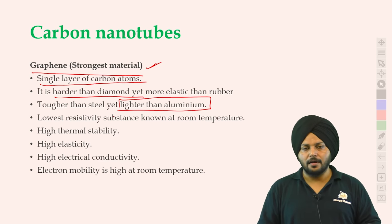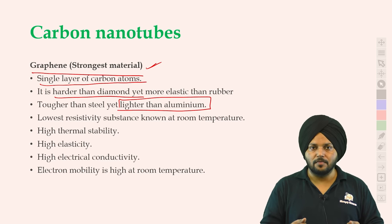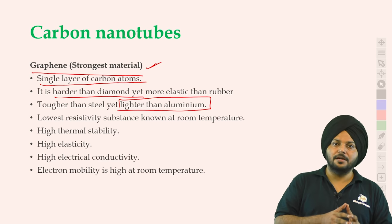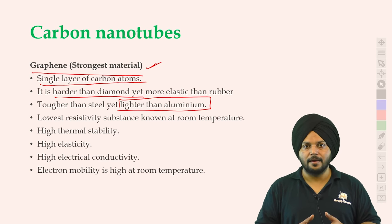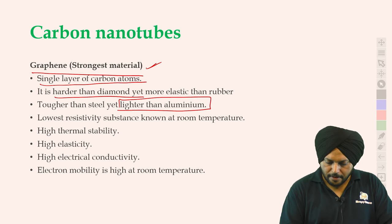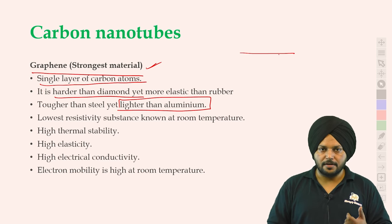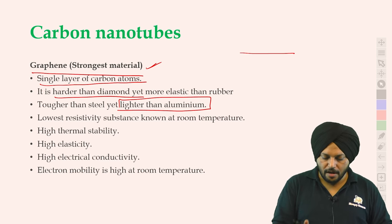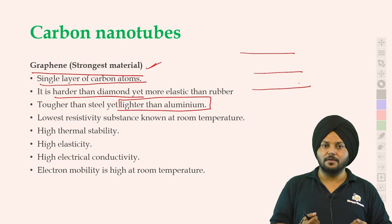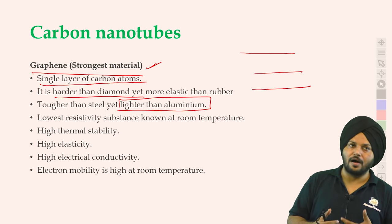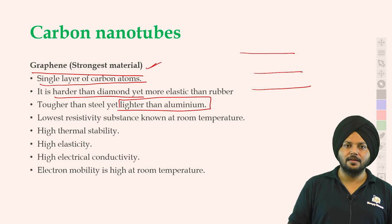जब हमें ऐसा material चाहिए जो easily break न हो, तो उसके साथ उसकी thickness भी increase होती है। जैसे एक copper की wire है, पतली सी — इसको तो आप easily mold कर दोगे। अगर इसकी thickness increase कर दूं तो उसको हम मold नहीं कर पाएंगे। तो hard material जो easily break न हो, उसकी thickness भी increase हो जाती है।